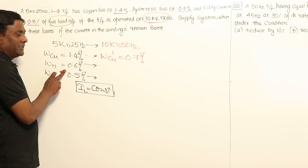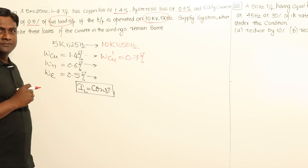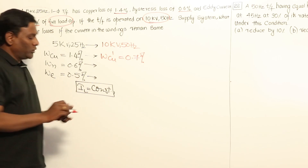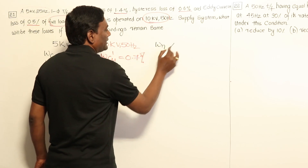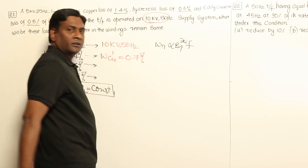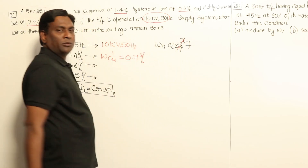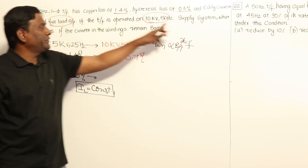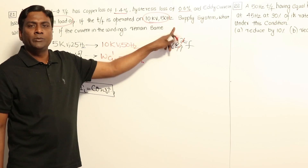Now, hysteresis losses: the V/F ratio is maintained constant, meaning Bmax is constant. Hysteresis loss is directly proportional to Bmax^X × F. Since Bmax is constant, it is directly proportional to frequency. Frequency doubles from 25Hz to 50Hz, so hysteresis losses should be doubled.